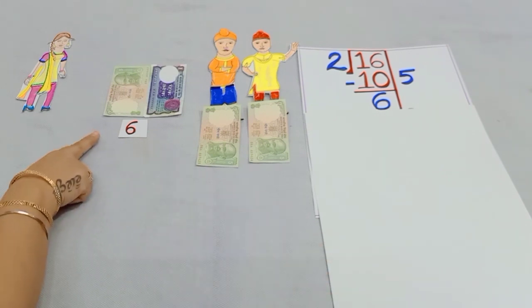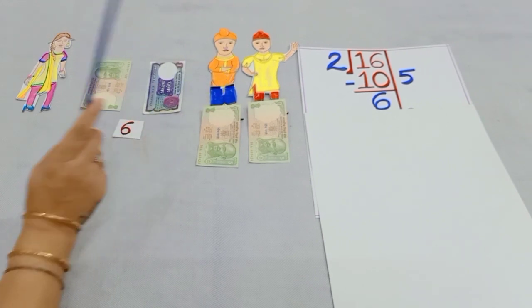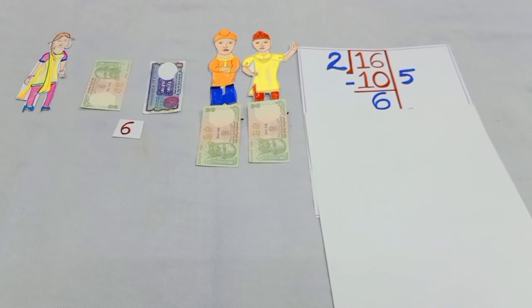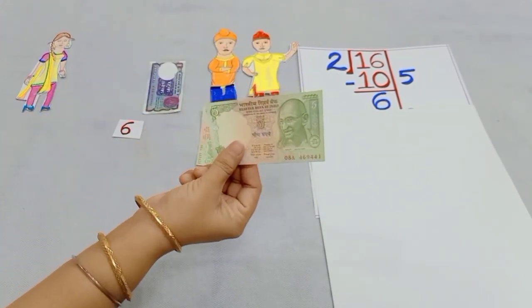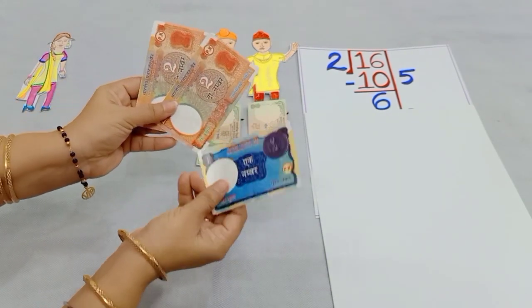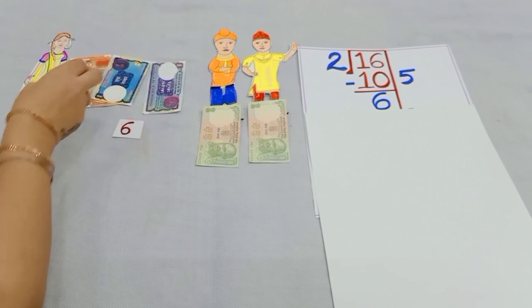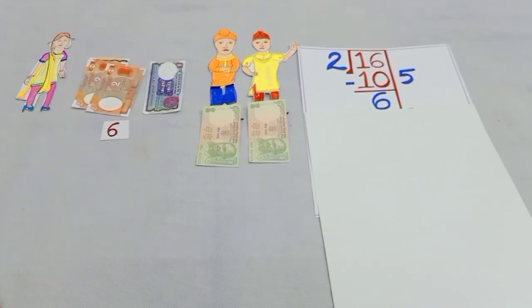Now, my dear students, she has to divide these 6 rupees between her two brothers equally. But, again, she is having one note of rupees 5. So, she will take two notes of rupees 2 and one note of rupees 1 in place of one note of rupees 5.